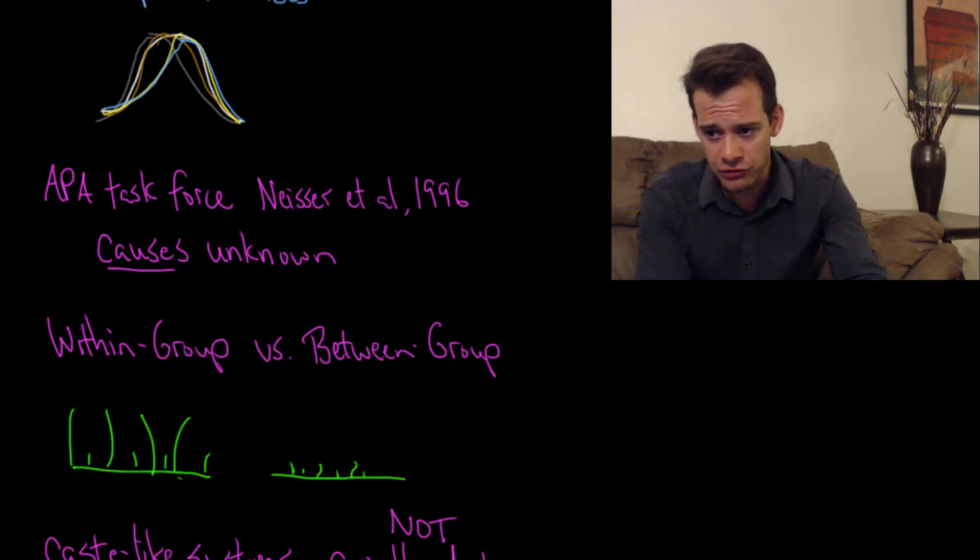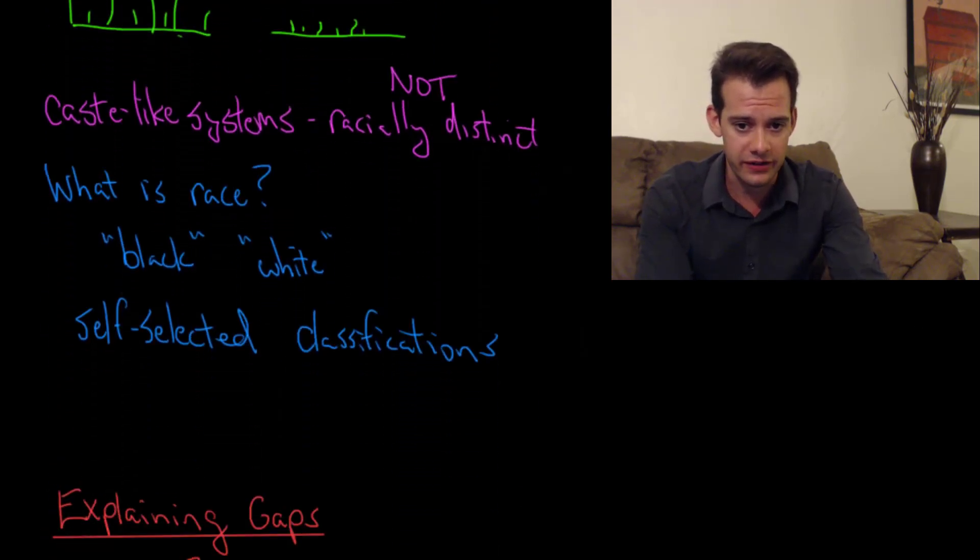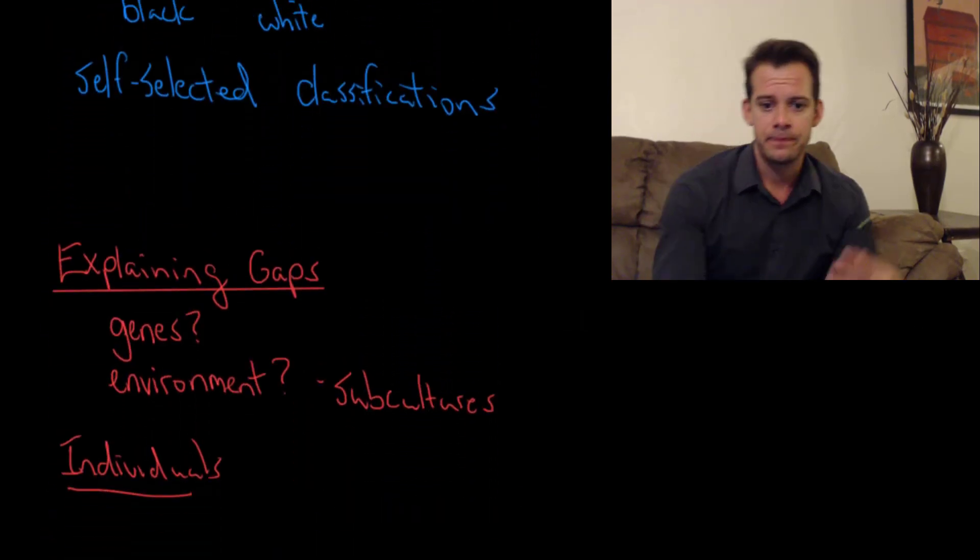This is just like we saw when we talked about sex differences in IQ. Knowing that somebody's male or female doesn't tell you anything about their IQ either, even though there are some average differences. The most important point is that people should always be treated as individuals. While we want to try to uncover the causes of these group differences and understand IQ better, when it comes to individuals we can't draw any conclusions about IQ on the basis of race. I hope you found this helpful. If so, please like the video and subscribe to the channel for more. Thanks for watching.